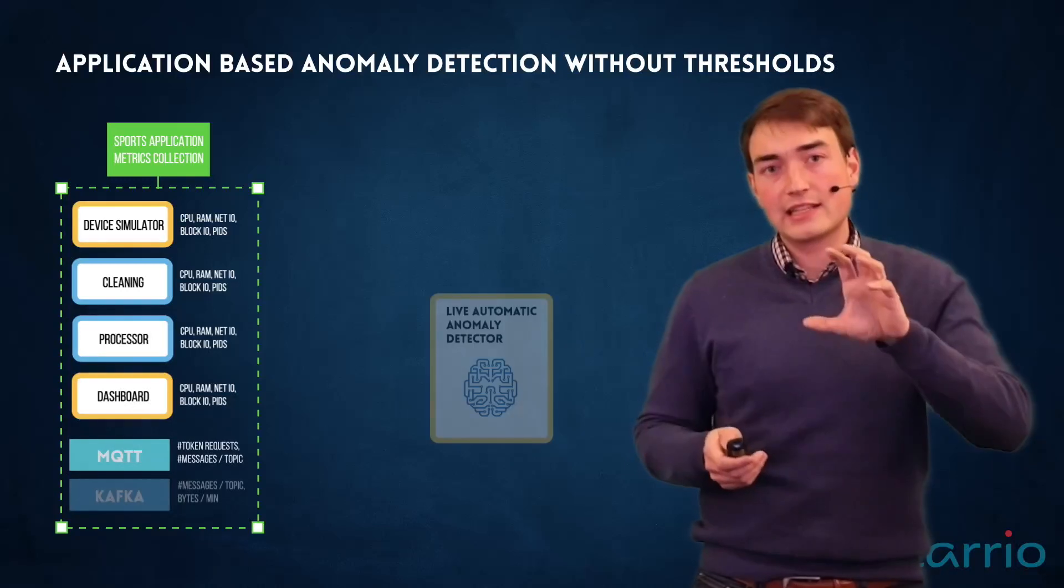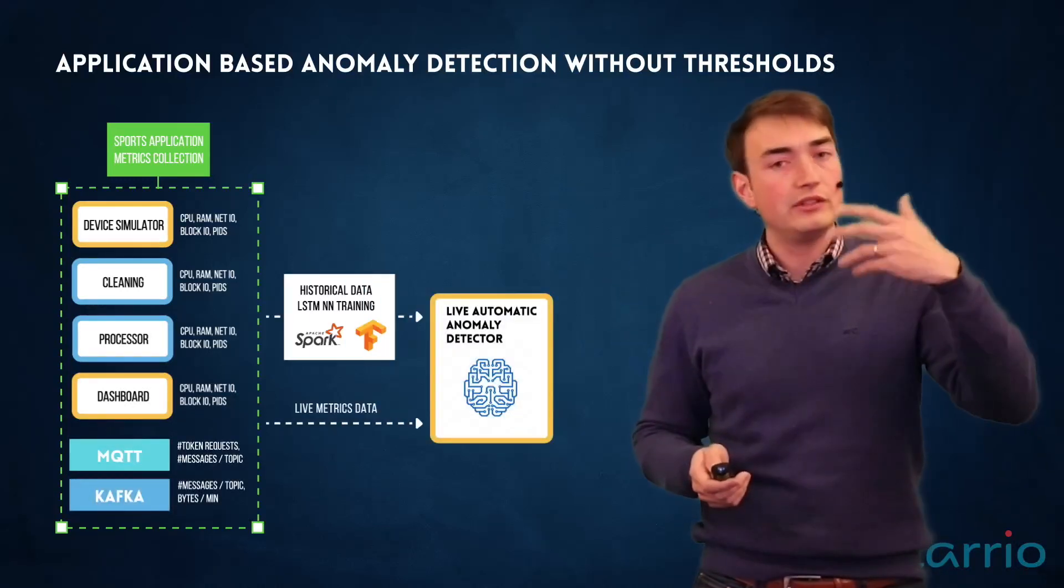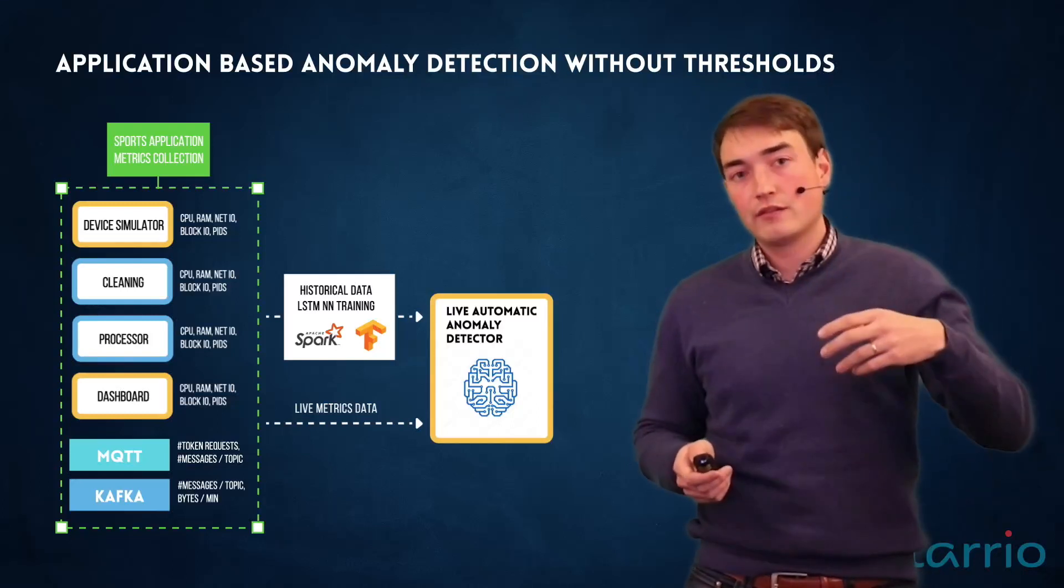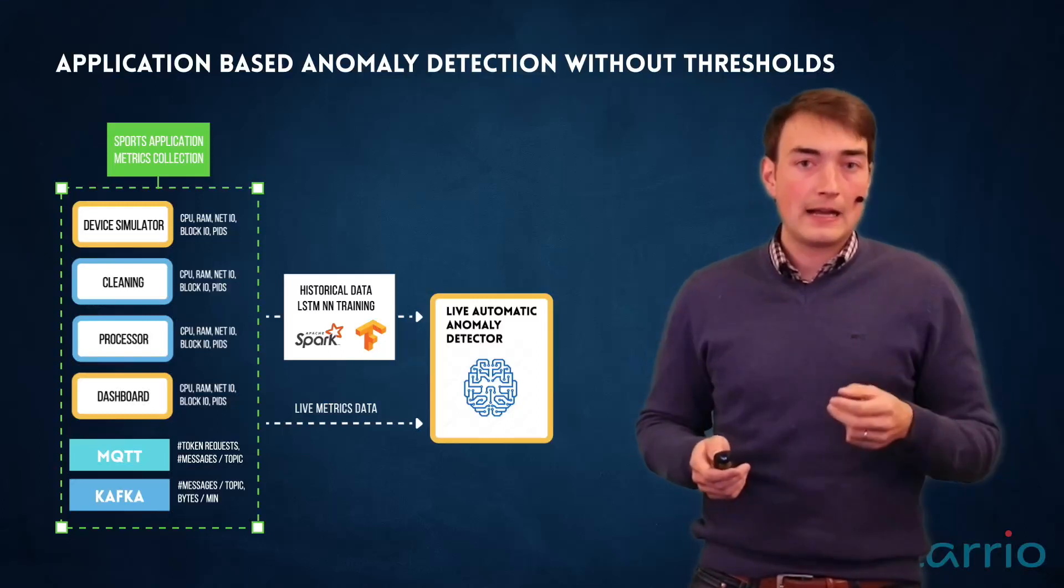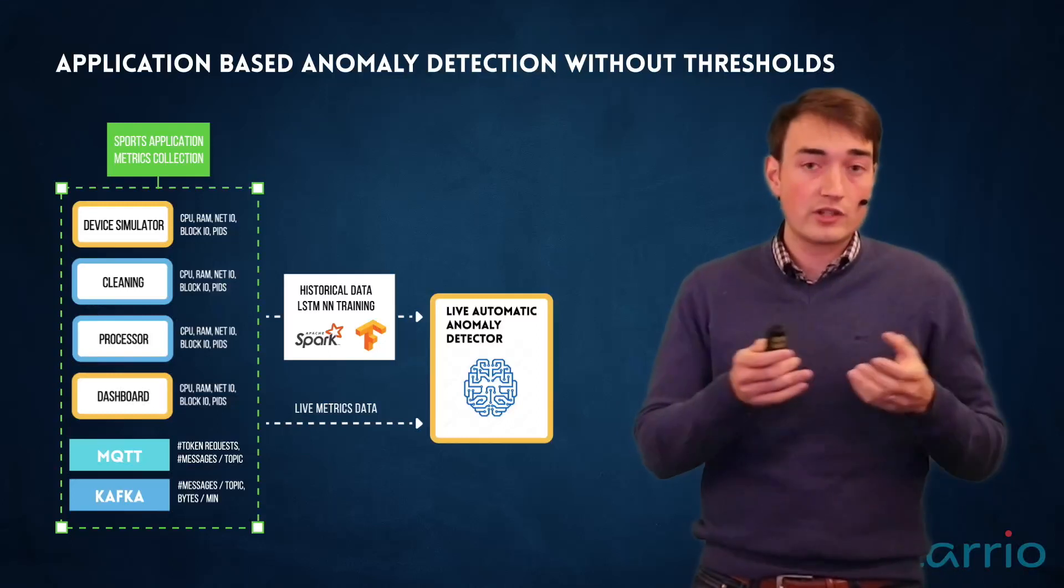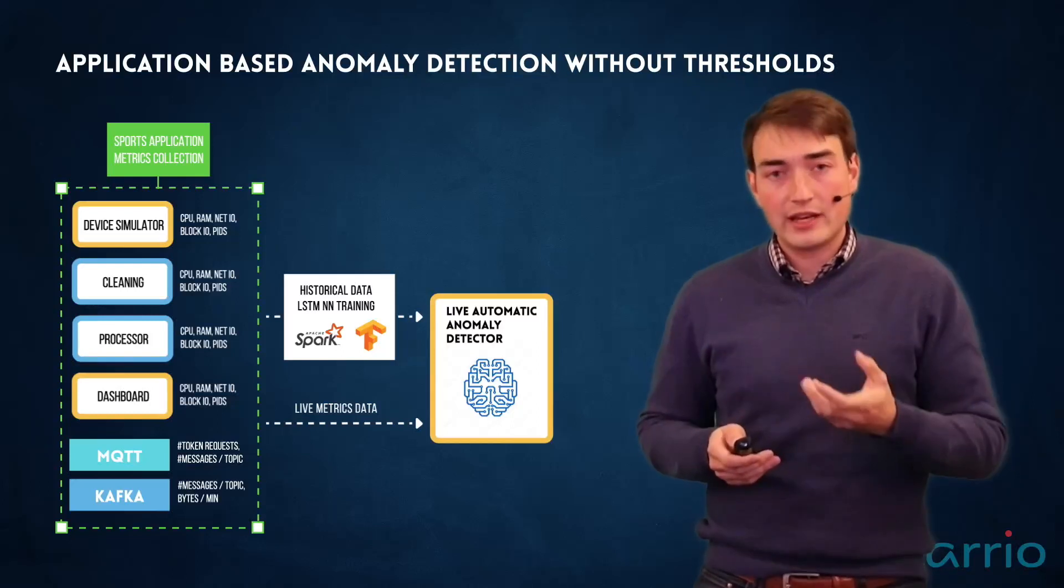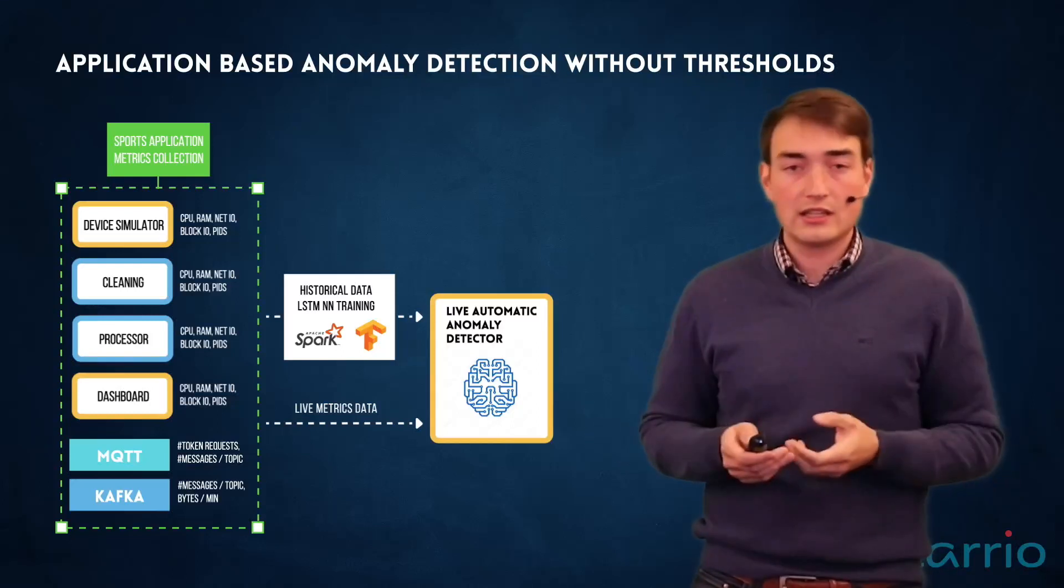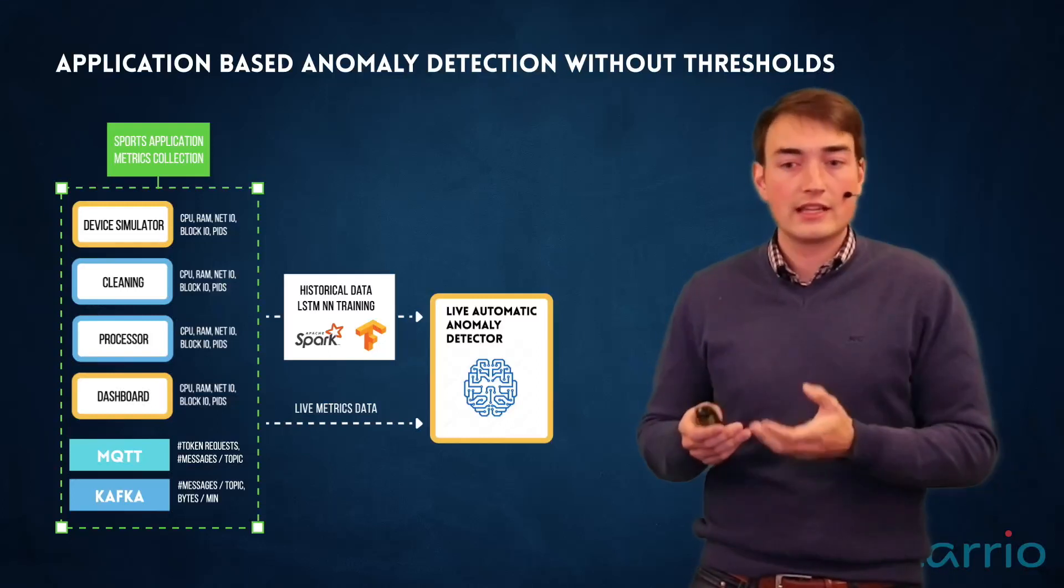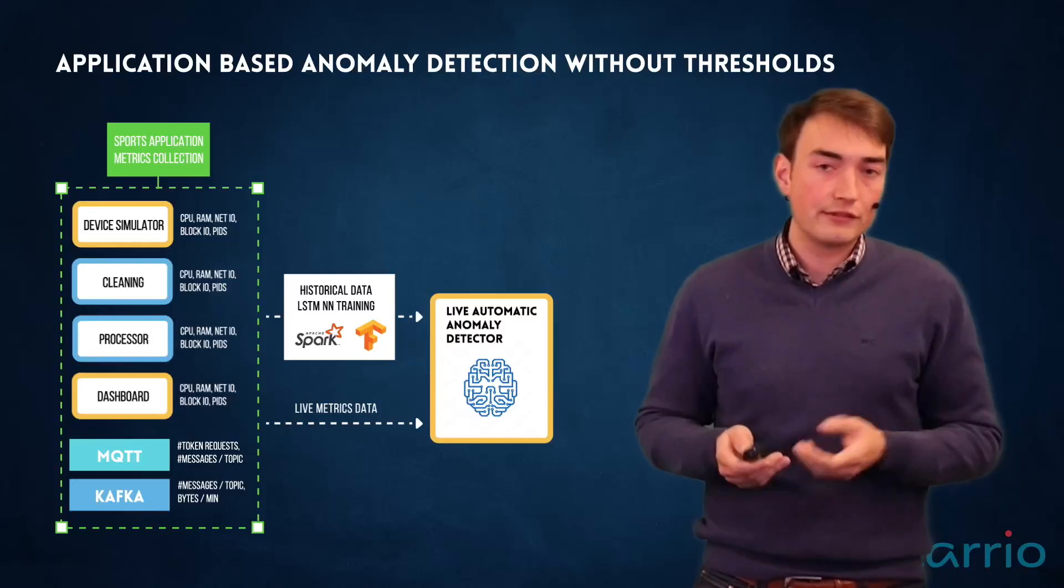So instead of having a flow in which some people have to define thresholds, we have now a flow that all the data that is coming from those microservices are being captured, are stored, are processed through a Spark cluster with TensorFlow, and that gives us a trained neural network based on LSTM to provide if there is an anomalous event yes or no. So in such a way we've been building an automatic live anomaly detector.